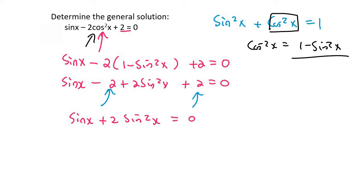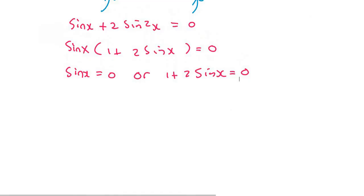We now take out a common factor of sin x, and then we're left with 1 plus 2 sin x. And so then we can say, therefore, sin x is equal to 0, or 1 plus 2 sin x equals to 0. And so that means 2 sin x equals to negative 1. And if we divide by 2, we have two answers now. Sin x equals to 0, or sin x equals to negative 1 half.